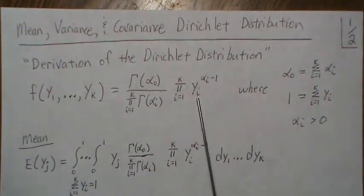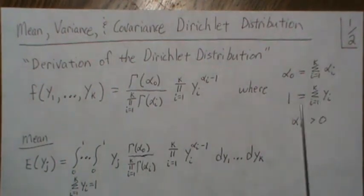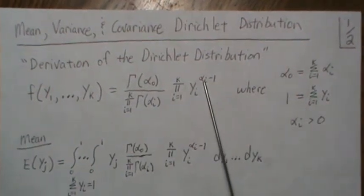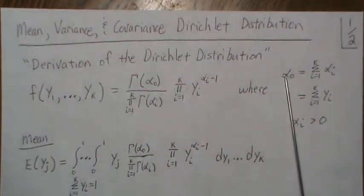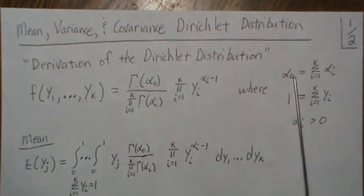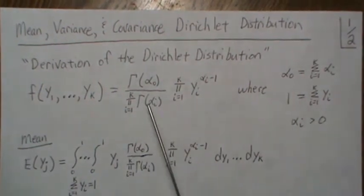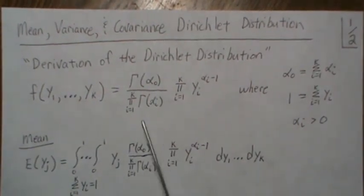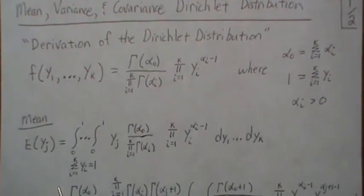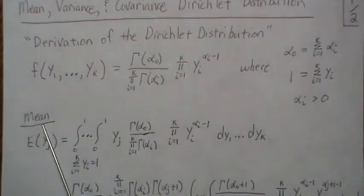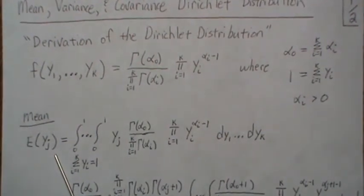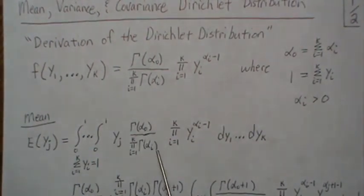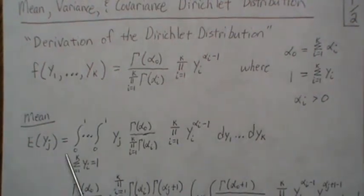These yi's have to add to 1, and these alpha i's, when we add them all, we're just going to call that alpha zero or alpha naught. That's going to help in our notation, makes it a little tighter. Now the mean: we go into more detail on the mean, and then the second moment and variance and covariance. I'll be able to skip some steps based on the detail of this step.